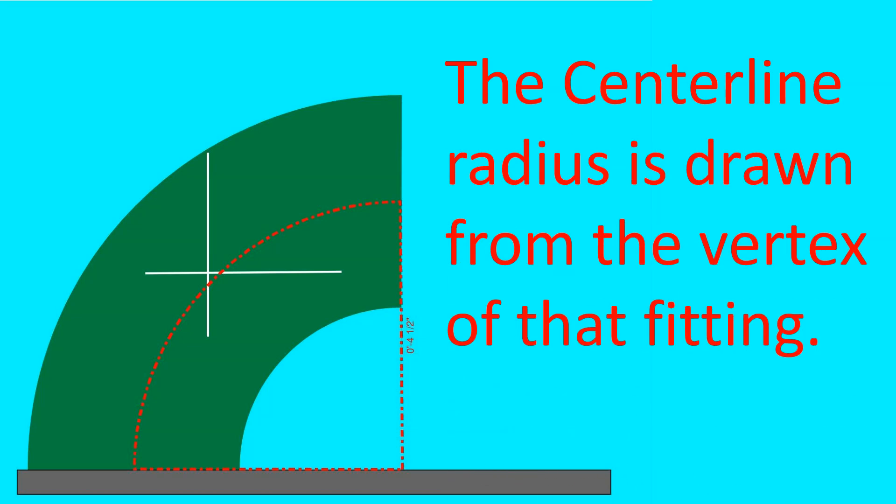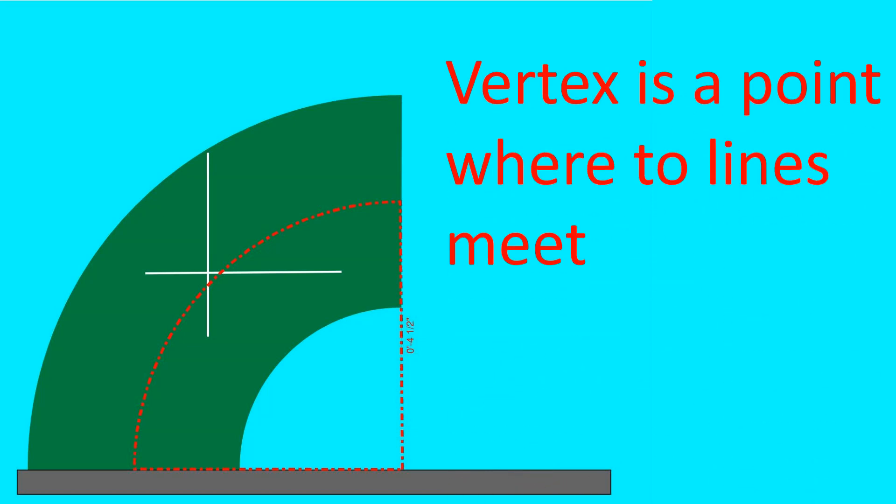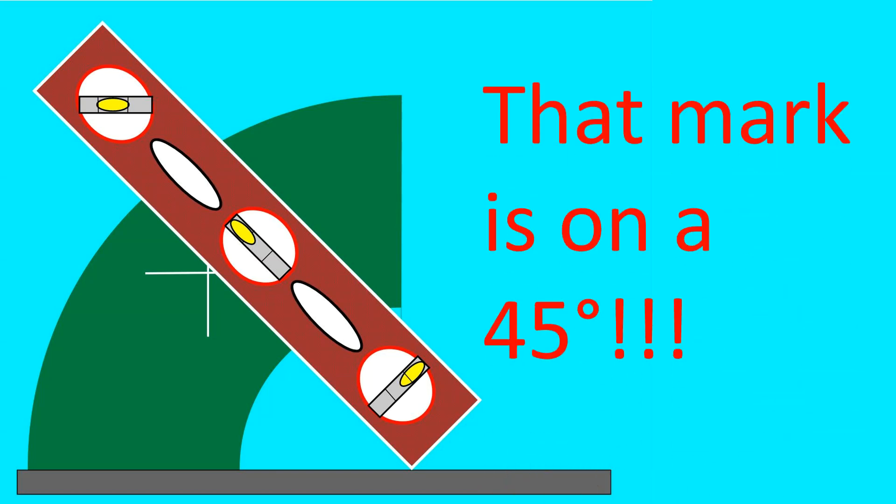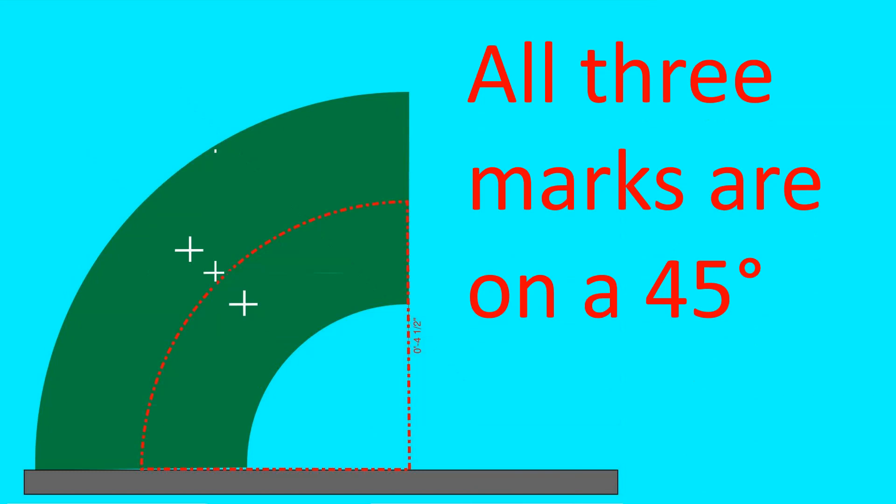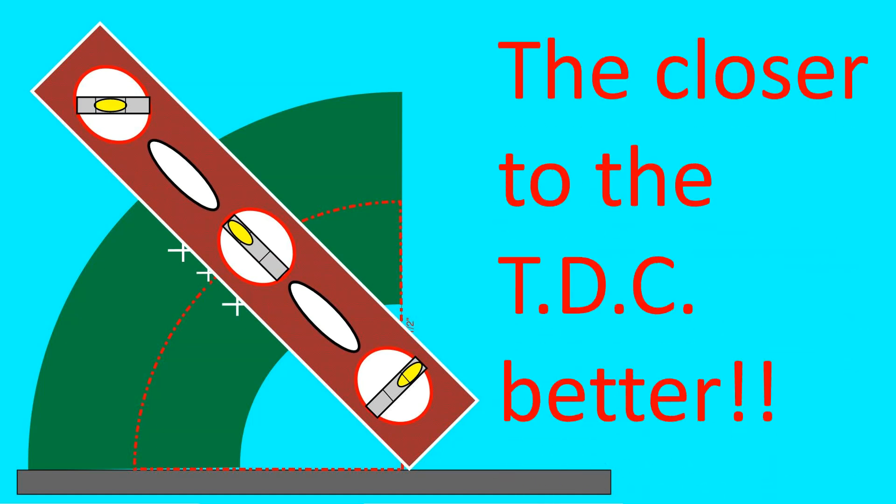The TDC would be the center line radius. The center line radius is drawn from the vertex of the fitting. The vertex is a point where two lines meet. So if we come off the two faces, they'll meet at that black ball. That's the vertex of the fitting. That mark is on a 45. All three marks are on a 45. But the one that's on the top dead center is the one we want to use. The other two would be okay. The closer to the top dead center, the better.